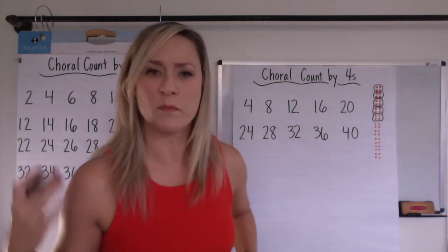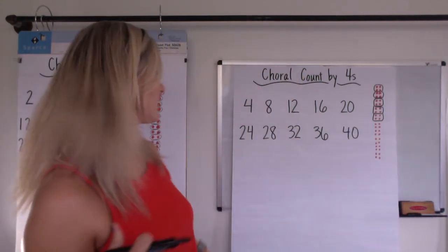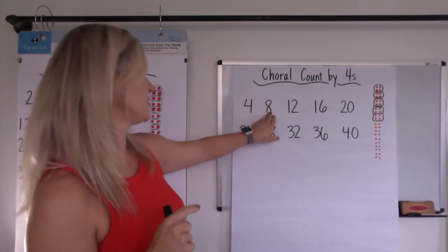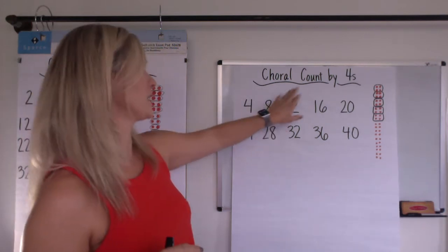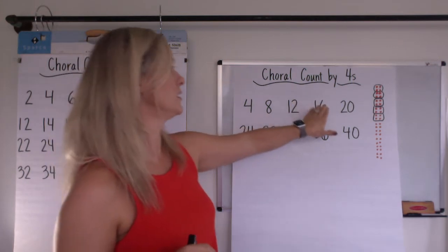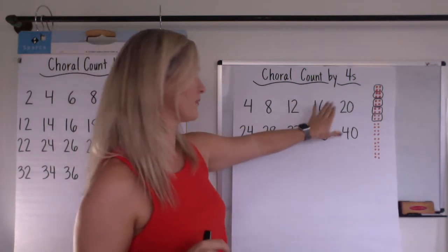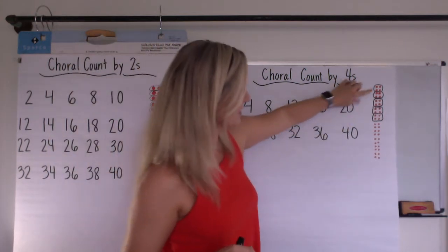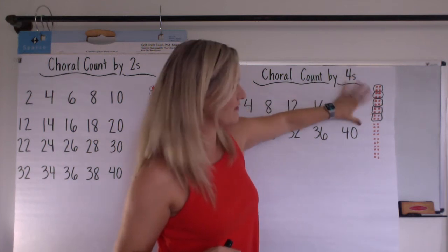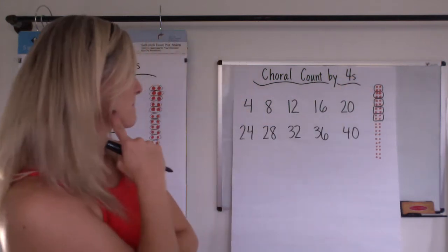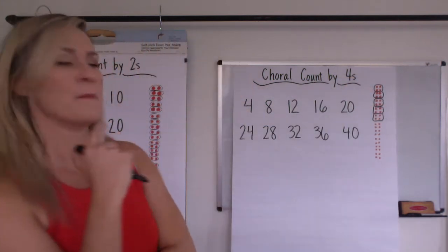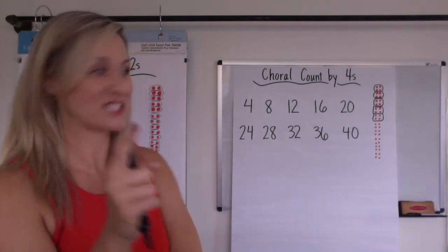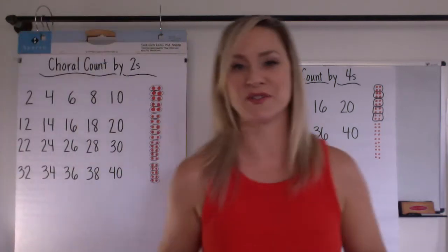How many groups of four make 20? Let's find out. That's one group of four, two groups of four, three groups of four, four groups of four, five groups of four. You can actually see that here: one, two, three, four, five — because this is 20 right there. Maybe some of you even connected in to the count by twos.